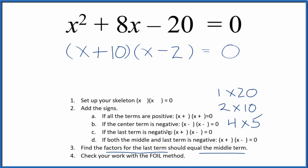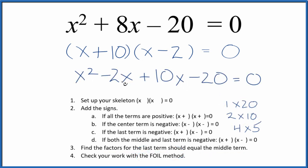And then we can check our work with the FOIL method. Multiply the first, the outside, the inside, and then the last. And when we do that, we can combine negative 2x and 10x. That gives us the 8x. So we have x squared plus 8x minus 20 equals zero. That's what we started with. So we factored the equation x squared plus 8x minus 20.